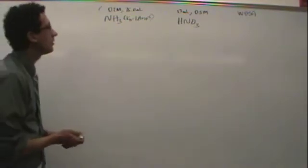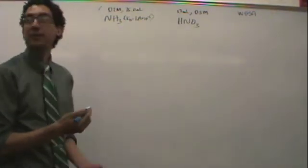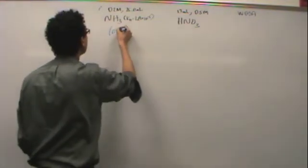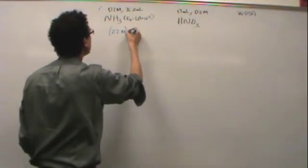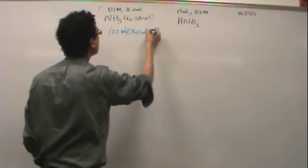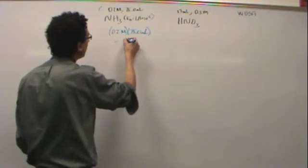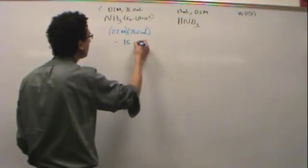Okay, so first I want to find the millimoles of acid and base. 0.2 molar times 75 milliliters. That'll equal, is that 15 millimoles?